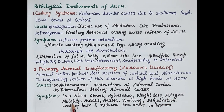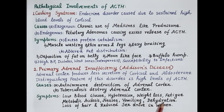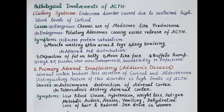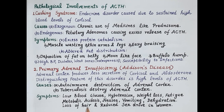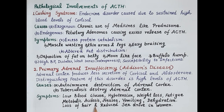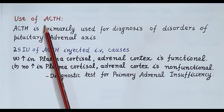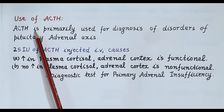Low levels of cortisol in the blood produce symptoms like low blood glucose, hypotension, weight loss, and fatigue. Since aldosterone regulates water and electrolyte balance, reduced aldosterone can cause metabolic acidosis, nausea, vomiting, and dehydration. Damage to zona reticularis reduces secretion of androgens, and reduced androgens can cause loss of hair and reduced sex drive in women.